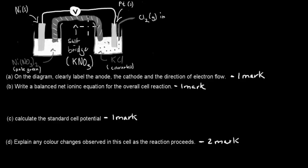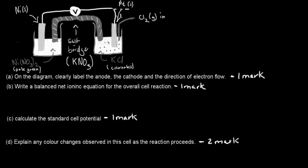This was the actual diagram from the past HC exam question. You've got your nickel electrode, chlorine gas coming in from this tube, and a platinum electrode which is inert. You have a salt bridge and voltmeter, your nickel solution which is pale green, and your potassium chloride solution which is colorless. All of that was given in the actual exam question.